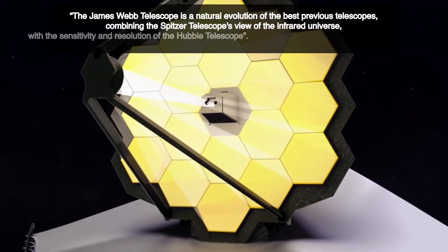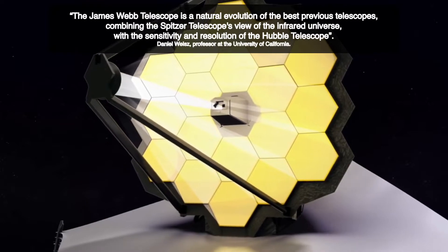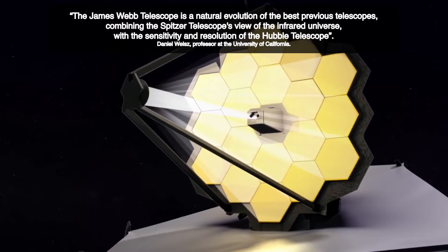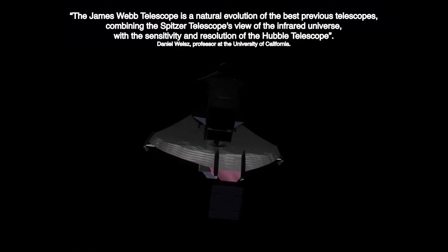The James Webb Telescope is a natural evolution of the best previous telescopes, combining the Spitzer telescope's view of the infrared universe with the sensitivity and resolution of the Hubble telescope.